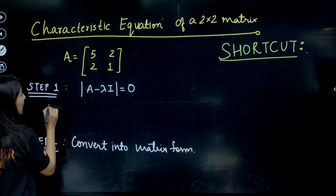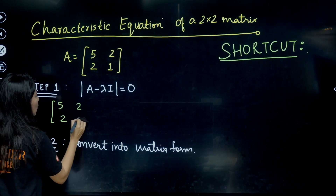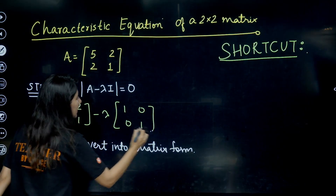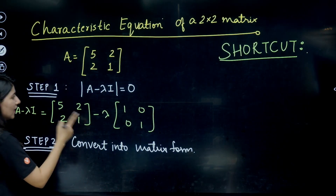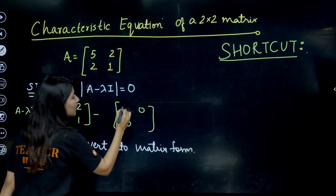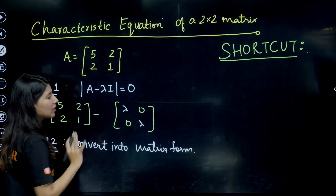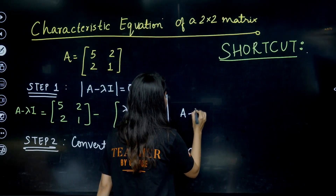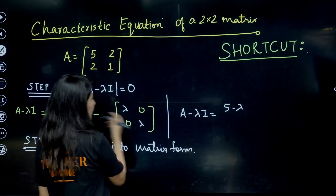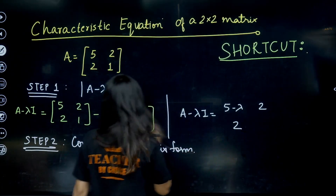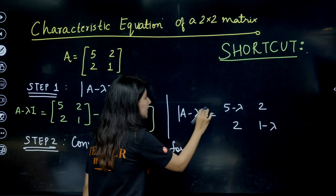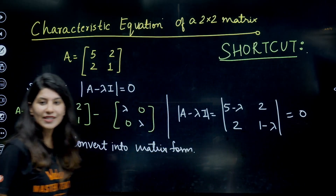So here, A minus λI: matrix A is [[5, 2], [2, 1]], minus λ times the identity [[1,0],[0,1]]. Multiply λ inside — λ appears on the diagonal. Subtracting gives A minus λI = [[5−λ, 2], [2, 1−λ]]. Now take the determinant of this matrix and set it equal to zero.